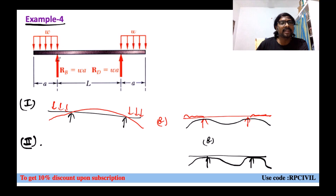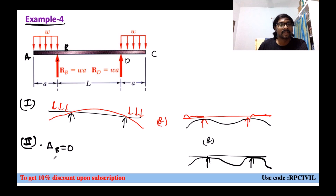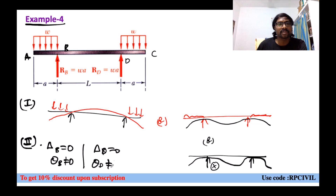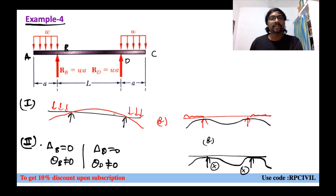Checking by compatibility conditions: points are A, B, C, D. At B, vertical reaction is there so delta B is obviously zero but theta B will not be zero (only vertical reaction, no moment reaction, so slope will not be zero). This diagram without rotation is not correct. At D also, only vertical reaction is there so delta D is zero but theta D is not zero. The diagram showing rotation zero at D is therefore not correct.